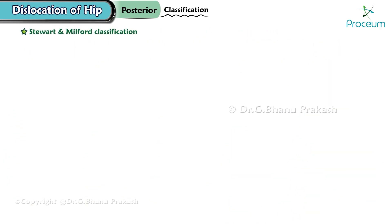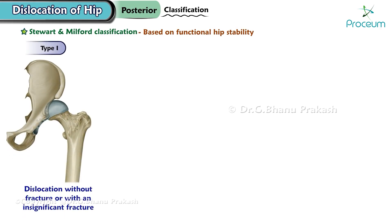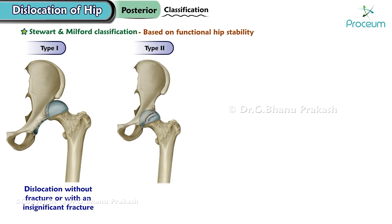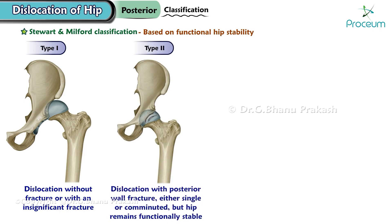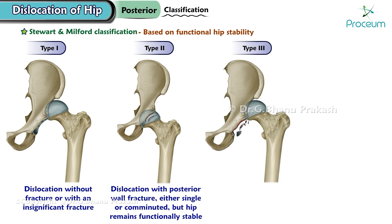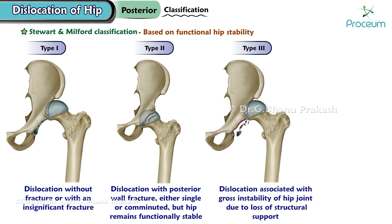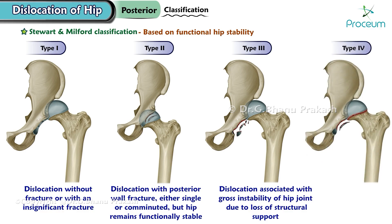The Stewart and Milford classification classifies posterior hip dislocations based on functional hip stability. Type 1 represents dislocation without a fracture or with an insignificant fracture. Type 2 includes dislocation with a posterior wall fracture, either single or comminuted, but the hip remains functionally stable. Type 3 indicates dislocation associated with gross instability of the hip joint due to loss of structural support. Type 4 consists of dislocation with a concurrent femoral head fracture.